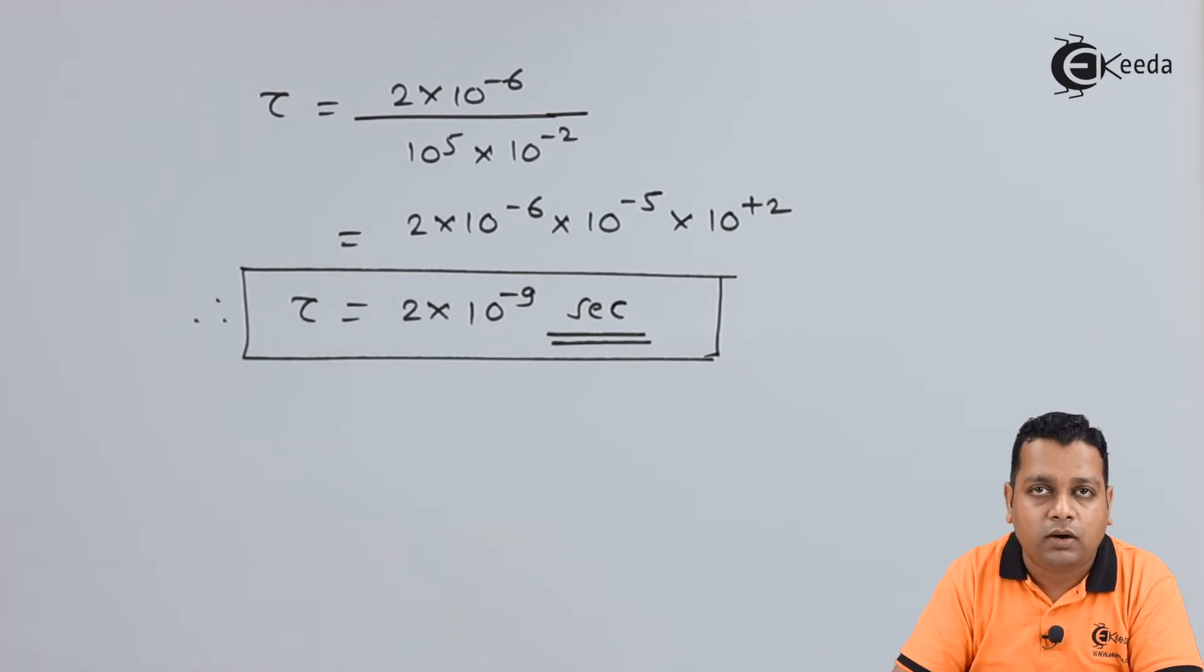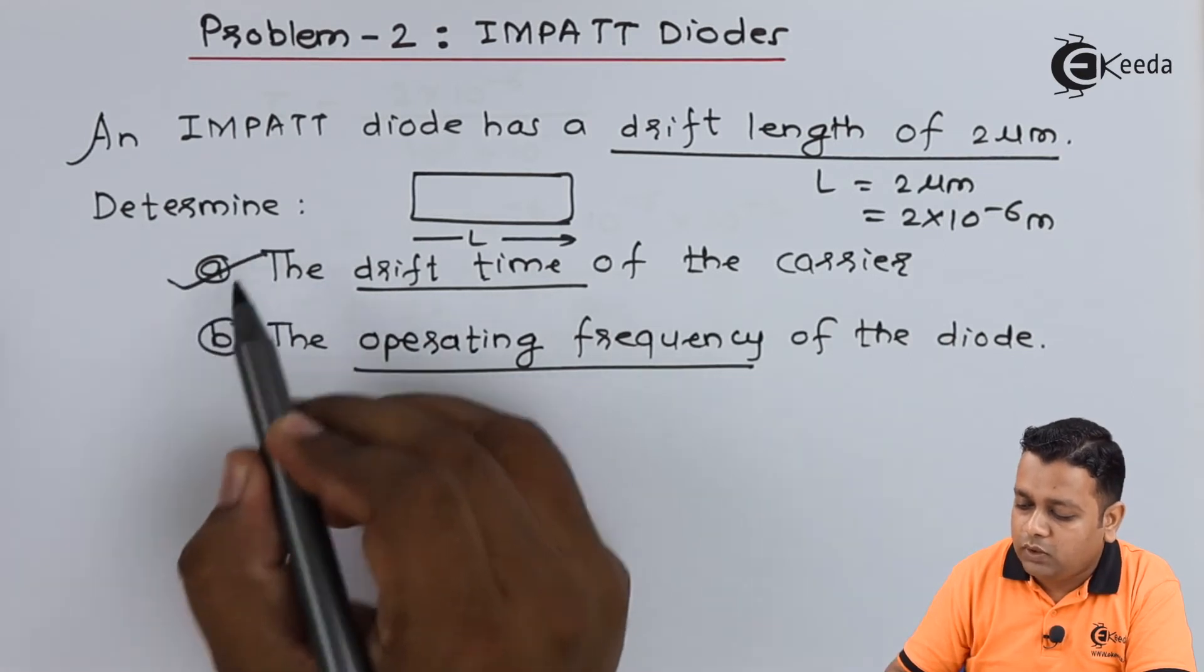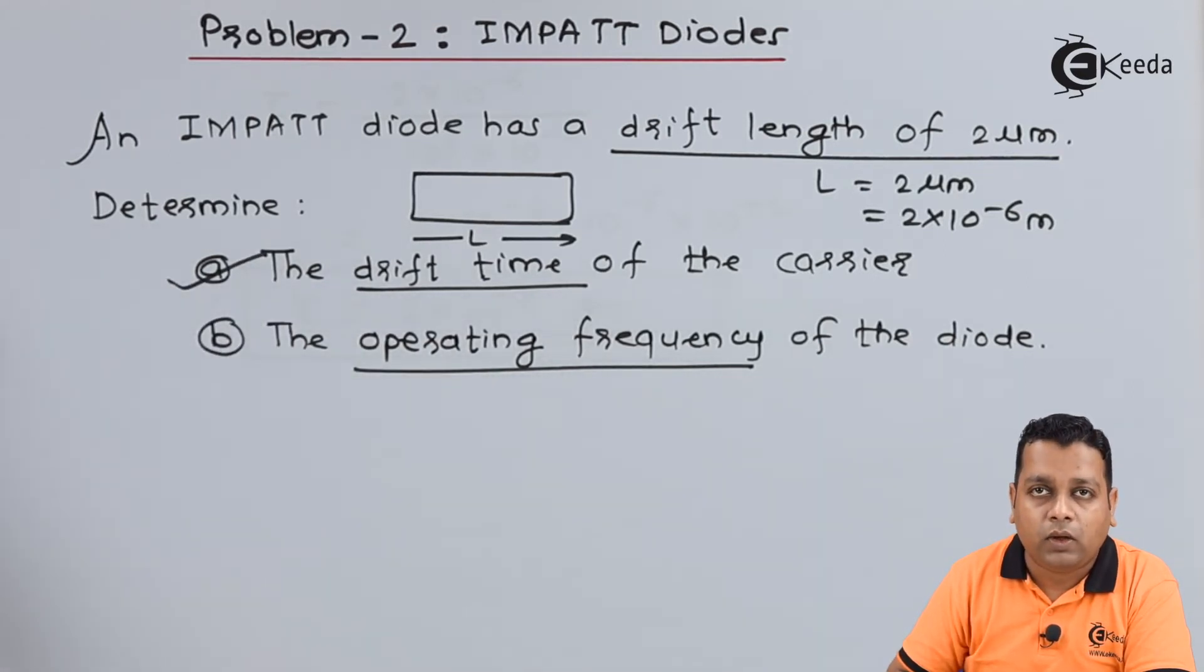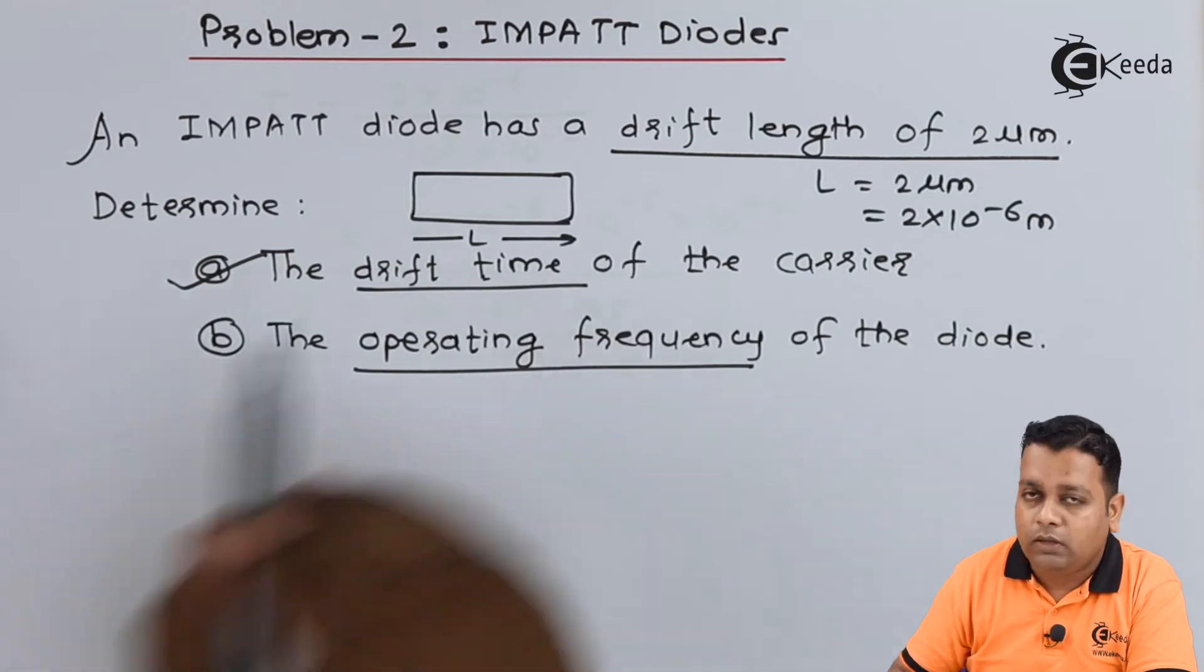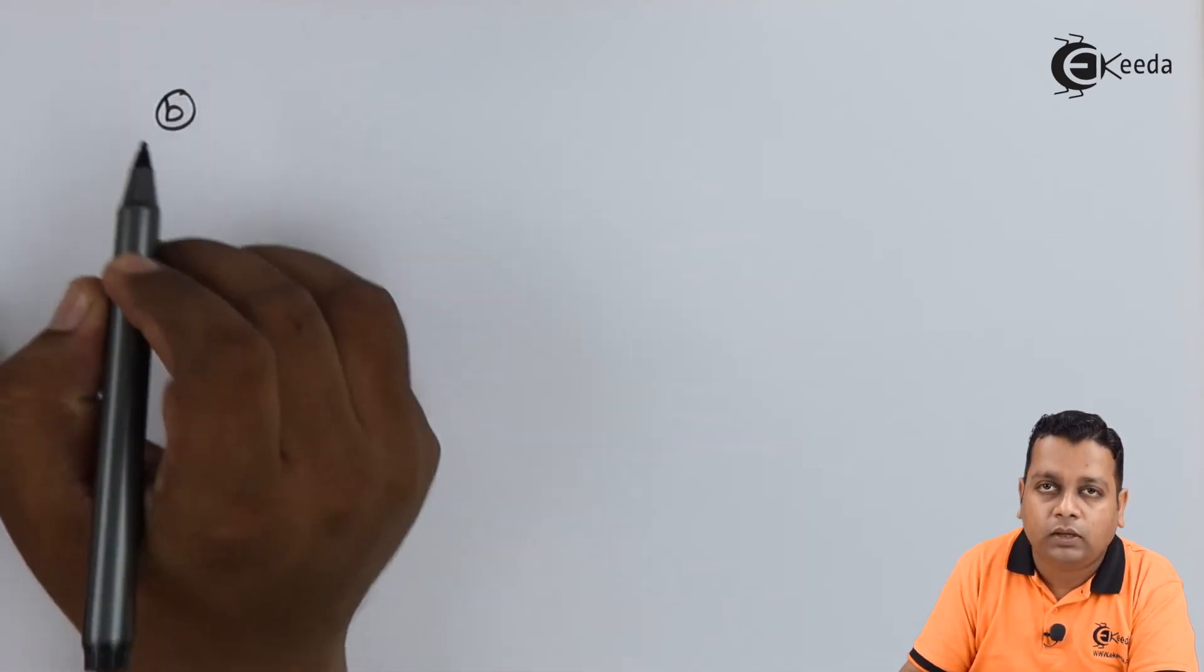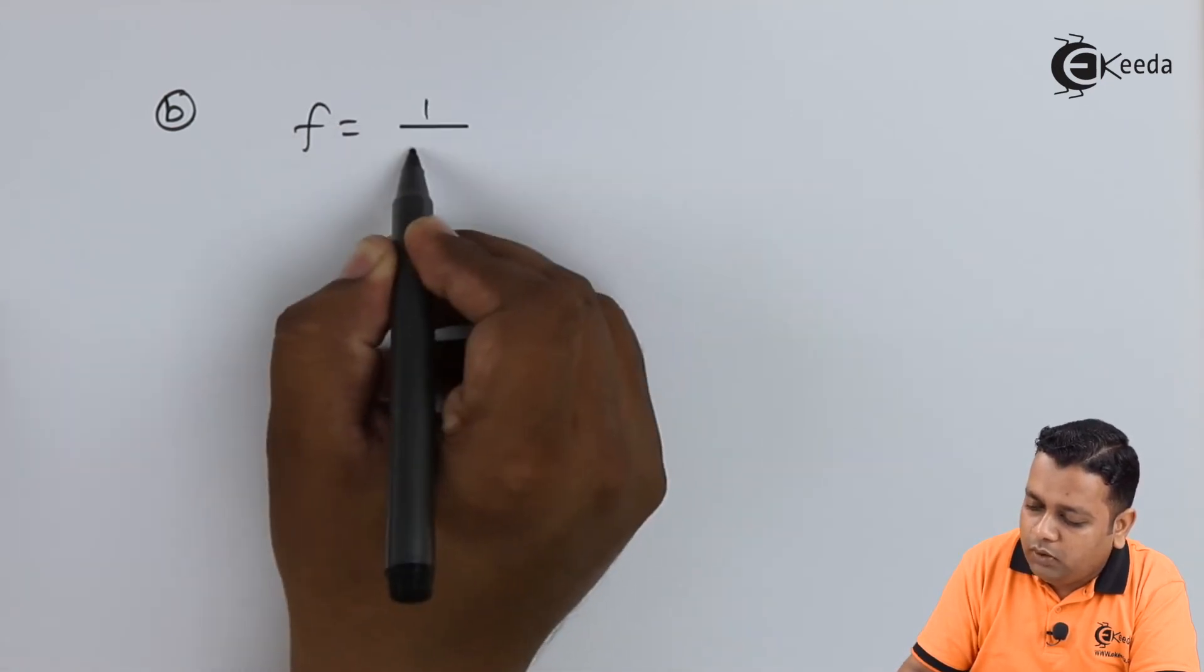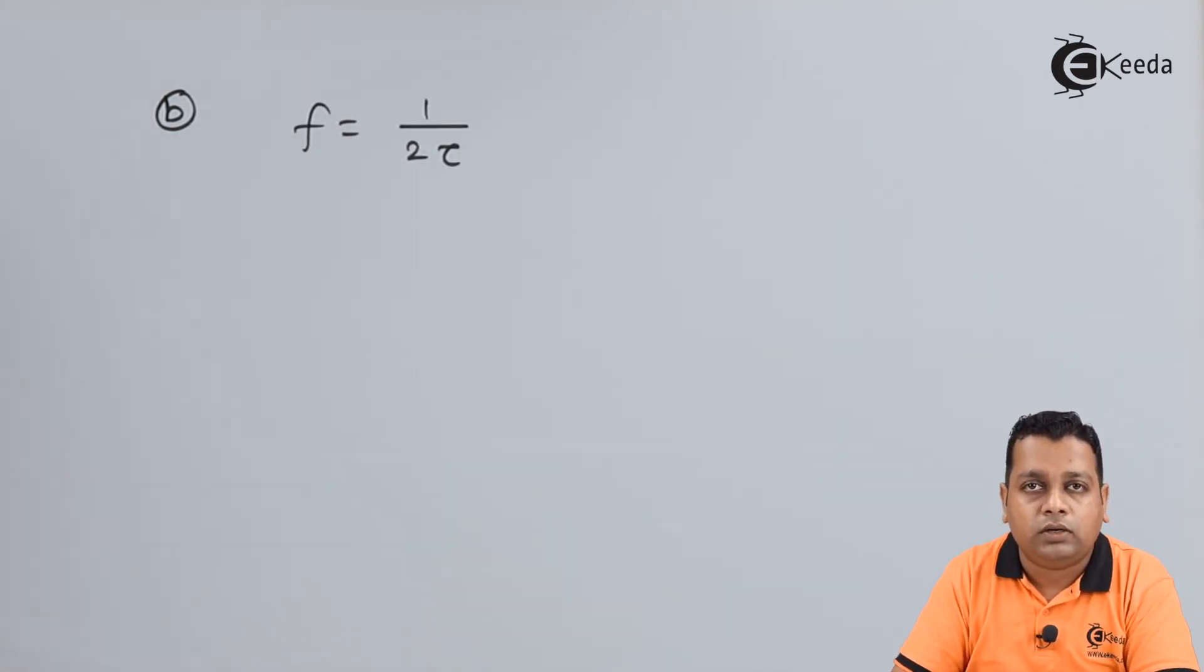Here we are back to the problem statement. We are completed with part A and now we require the value of operating frequency of the IMPATT diode. The operating frequency can be obtained in part B by making a simple formulation that frequency is equal to 1 upon twice tau, tau being the drift time. The tau we just calculated as the answer for part A can be readily used to get input in this particular formulation.